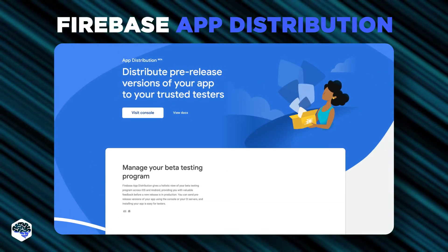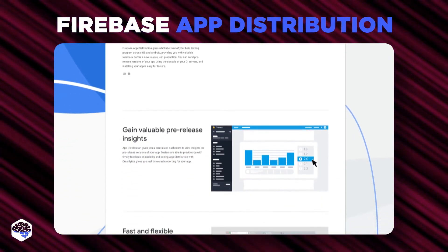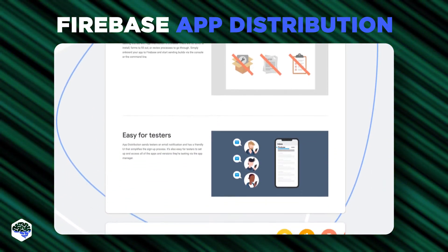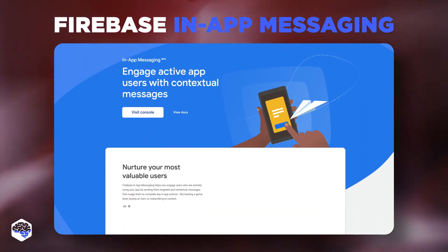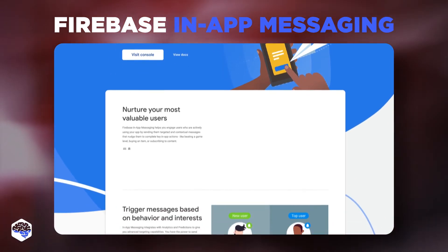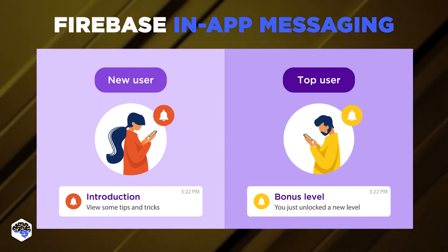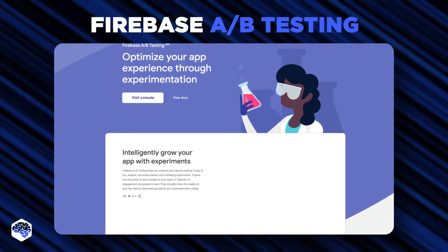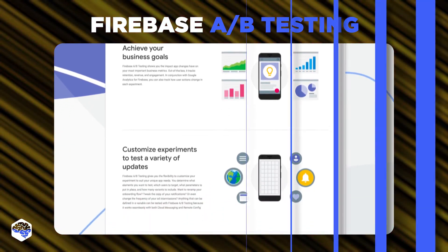Firebase App Distribution helps to manage your beta testing program. You can send pre-release versions of your app using the console of your CI servers, and installing your app is easy for testers. And finally, let's talk about Firebase services for growing your business. Firebase In-App Messaging is a tool that helps you engage and retain users with targeted messages. It assists in identifying the interests and behaviors of your app's users. Firebase A/B Testing is a tool designed for testing and validating your app's features to improve the user experience or the product as a whole.